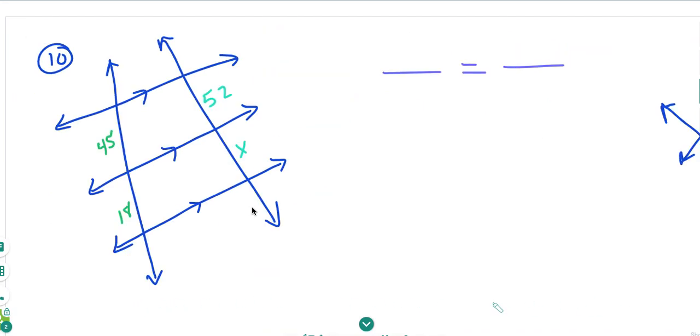So now we can use this information to find missing parts. So we have our three parallel lines and we have our two transversals.